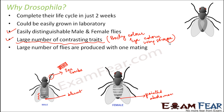A large number of flies are produced with one mating. One sexual interpose produces a lot of flies, so the number of offspring produced is very high. This helps because when you have small numbers of flies you can get them to mate and produce more and more flies.